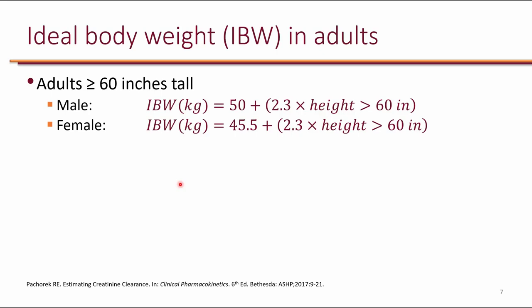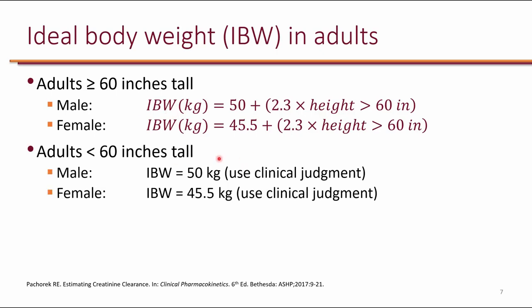Although the original equation used total body weight, it's been suggested that total body weight may not be the best estimate for every patient. So we typically calculate ideal body weight using established equations. For patients who are less than 60 inches tall, specific values are suggested for ideal body weight. There are no universal guidelines on how to approach this, so clinicians may differ in their approach. For the purpose of this class, we will use the standard equations.